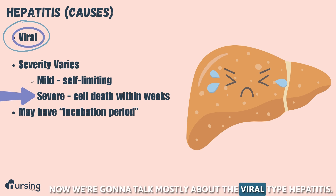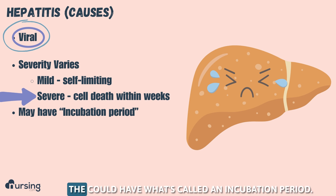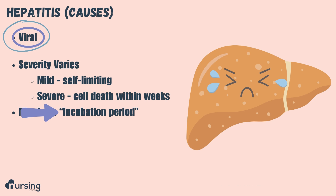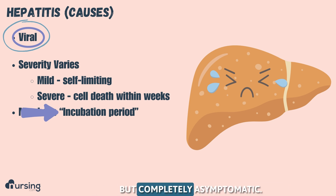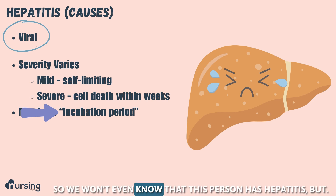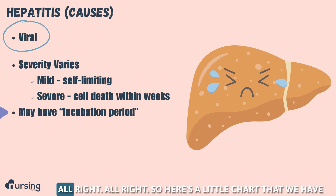One important thing to note is that with viral hepatitis, they could have what's called an incubation period. That means they may be contagious but completely asymptomatic. So we won't even know that this person has hepatitis — they won't show symptoms for two weeks.